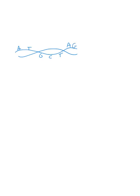One strand is ATGCTAG and the opposite strand will have the complementary bases TACGATC. DNA polarity goes from five prime to three prime on one strand, and the opposite strand has the opposite polarity — from the five prime carbon to the three prime carbon. Each base is hydrogen bonded two times in the case of AT base pairs and three times in the case of GC base pairs.